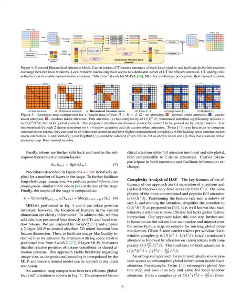Windowed attention increases efficiency, but at the cost of losing the ability to interact with features globally. To address this, we introduce carrier tokens that summarize and interact with the entire feature map, compensating for the loss of global communication. With L carrier tokens per window, the complexity of the local window becomes proportional to the sum of (K² + L) × H² × D. We then apply attention to the carrier tokens, which has a complexity proportional to (H⁴/K⁴) × L² × D. The total cost of both attentions is proportional to the sum of three components: K²H²D, LH²D, and (H⁴/K⁴)L²D.